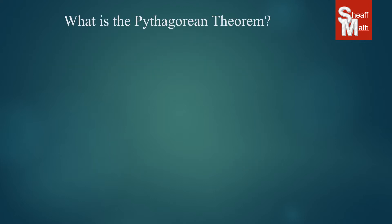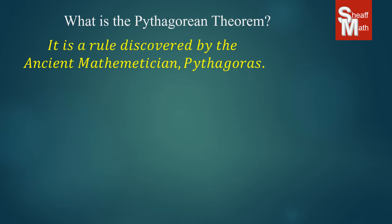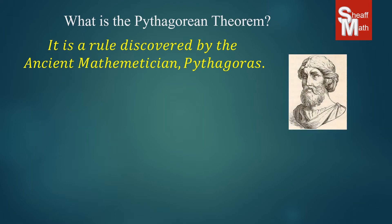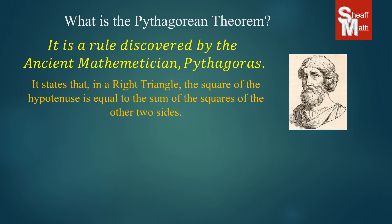So what exactly is the Pythagorean Theorem? Well, it is a rule of math that was discovered or at least attributed to the ancient mathematician Pythagoras a couple thousand years ago or more than that. And what it states, and this is a very mathematical definition, but in a right triangle the square of the hypotenuse is equal to the sum of the squares of the other two sides.